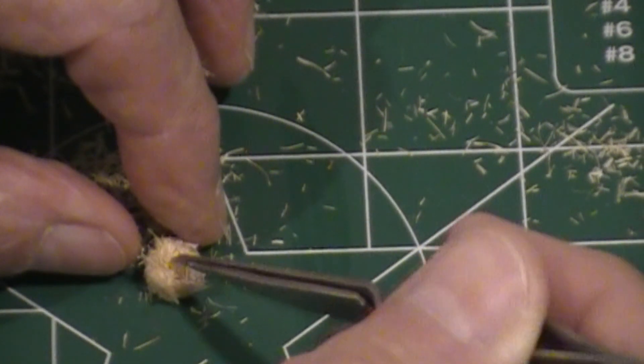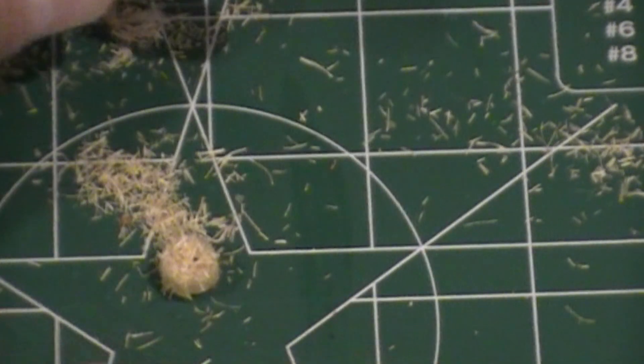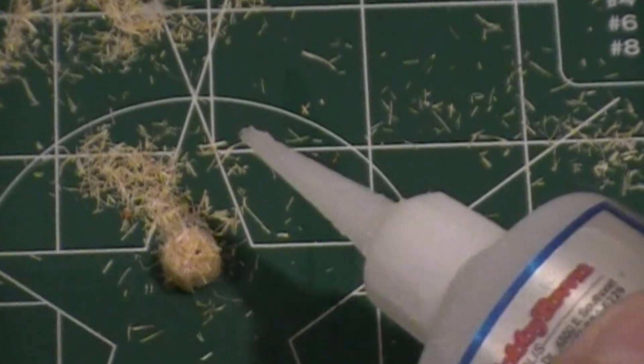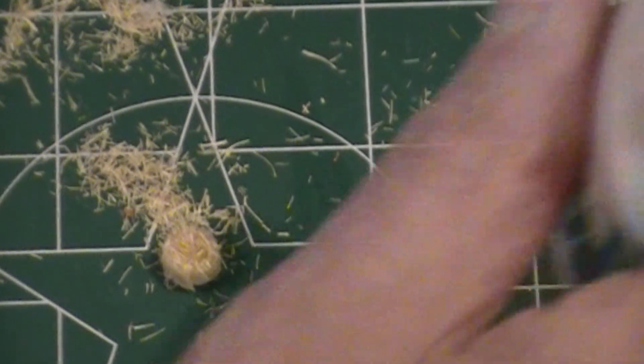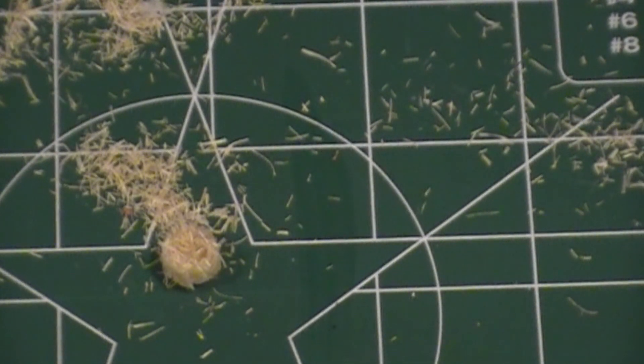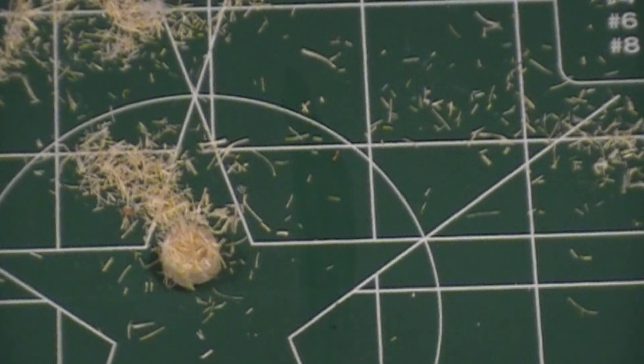And give it a little shot of CA. Drop the CA on there and let that sit for a bit, and we'll turn it over and do the other side. And hopefully we'll have a hay bale.